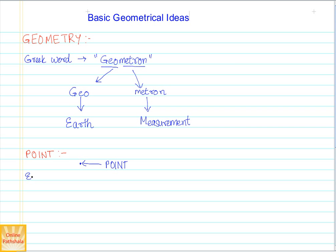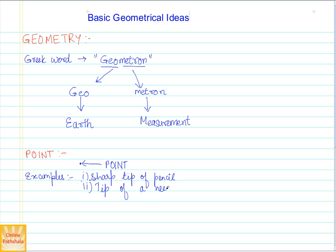The first example of a point is the sharp tip of a pencil — if you sharpen your pencil very well and look at the tip, that is a point. Another common example is the tip of a needle. And if you have ever used a compass, the tip of the compass is also an example of a point.